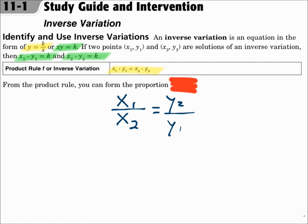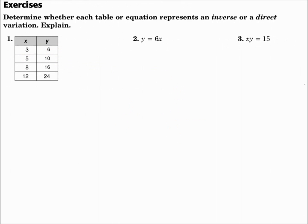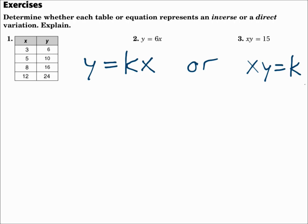We could solve questions like this by graphing, or algebraically — always pay attention to what they're asking you for. We need to determine whether each table or equation represents an inverse or a direct variation. Direct variation is y equals k times x; inverse variation is x times y equals k.